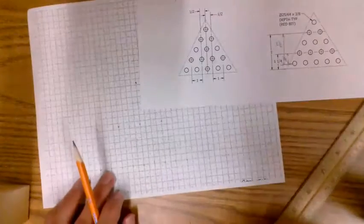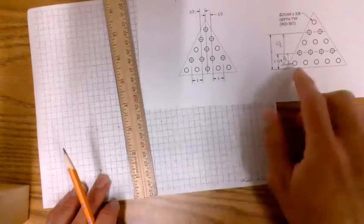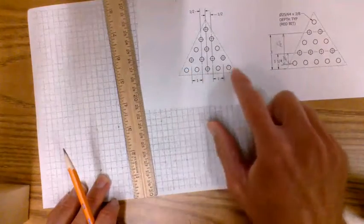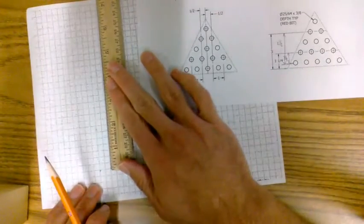So we just go and we find our lines that we just drew. Again, coming off this row of circles, this row of circles, we come up three quarters of an inch.